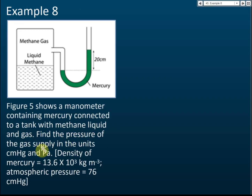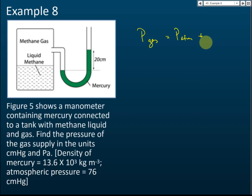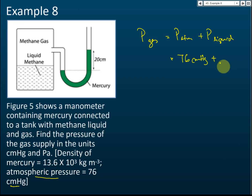Example 8: A figure shows a manometer containing mercury connected to a tank with methane gas. Find the pressure of the gas in cm Hg and in Pascals. The pressure of the gas equals the atmospheric pressure plus the pressure of the liquid. The atmospheric pressure is 76 cm Hg. We need to find the pressure of the liquid — which corresponds to the mercury column at the relevant reference point.